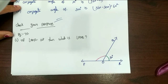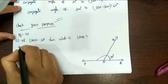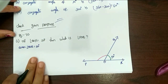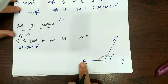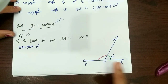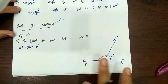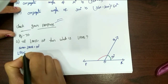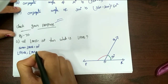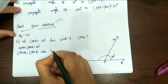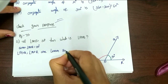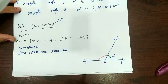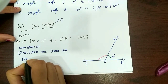So here we have a linear pair. We have been given angle QOR equal to 50 degrees. Now angle POQ and angle QOR together form a straight line — these two are a linear pair. Angle POQ plus angle QOR equals 180 degrees, because they are a linear pair.